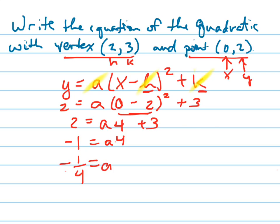Now I rewrite the equation, filling in for a, h, and k. y equals negative 1 fourth, which is a, times x minus 2, which is h squared, plus 3, which is k.